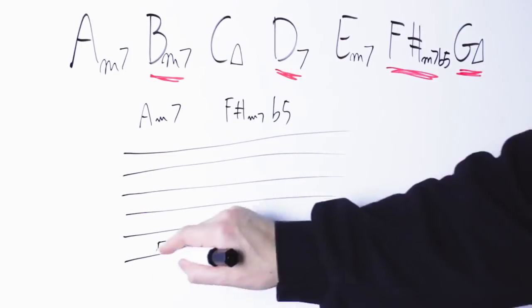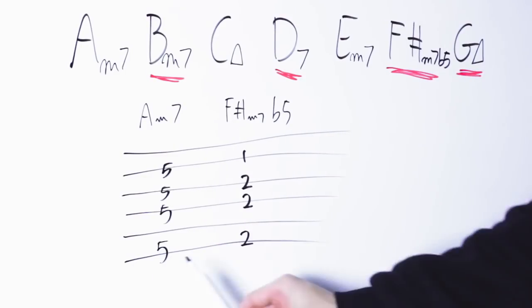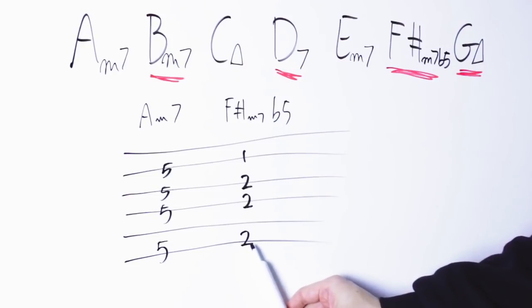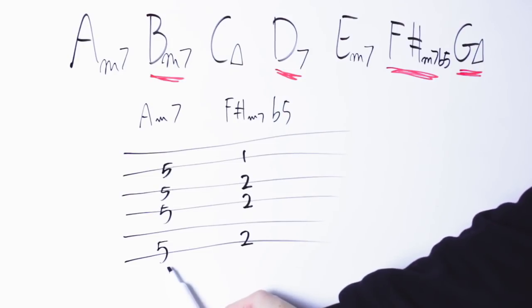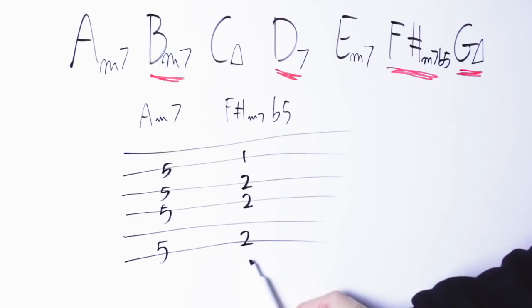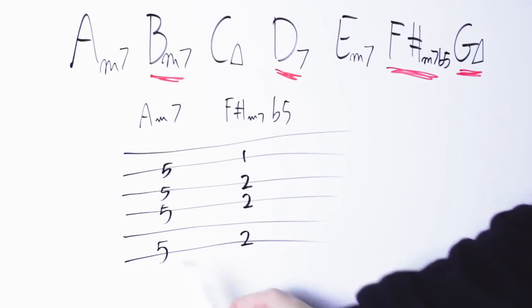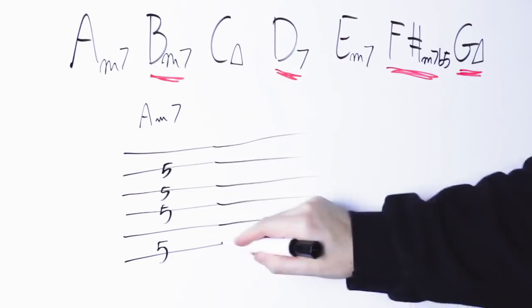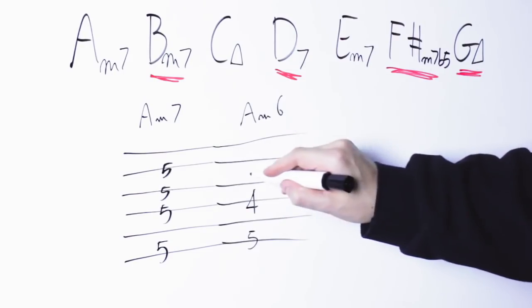I could play A minor and then F sharp minor 7 flat 5. Or I could do an inversion of this chord, and so what I'm playing is A minor 7 followed by A minor 6th.